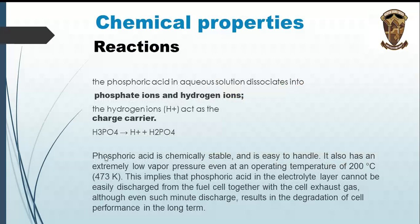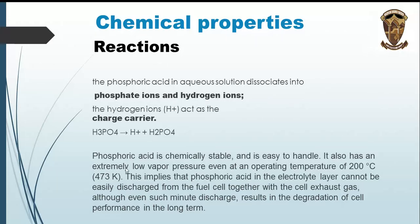Regarding chemical properties: phosphoric acid in aqueous solution dissociates into phosphate ions and hydrogen ions, where the hydrogen ions act as the charge carrier, decomposing into H+ and H2PO4-. Phosphoric acid is chemically stable and easy to handle. It also has an extremely low vapor pressure even at an operating temperature of 200 degrees Celsius, implying that phosphoric acid in the electrolyte layer cannot easily be discharged from the fuel cell with the exhaust gas, although even minute discharge results in degradation of cell performance over the long term.